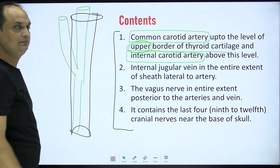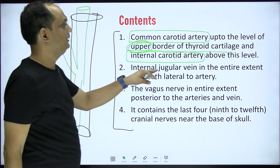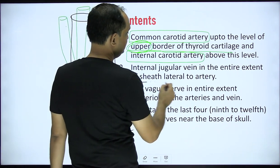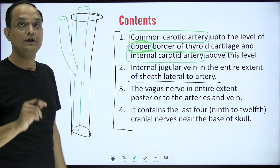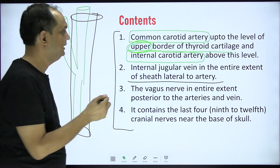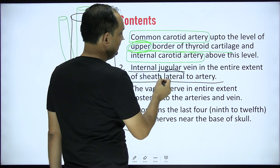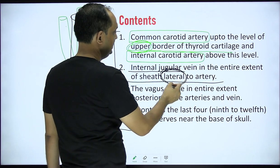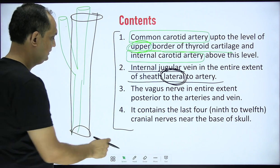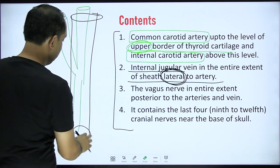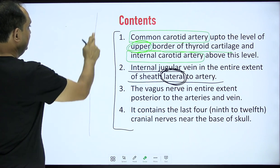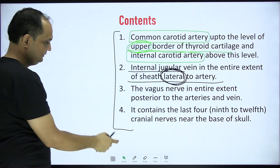The internal jugular vein is present throughout the entire length of the sheath. An important exam question is about its relation: the internal jugular vein is lateral to the artery inside the carotid sheath.